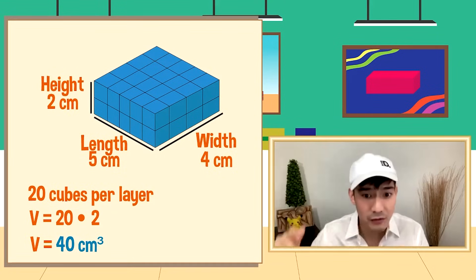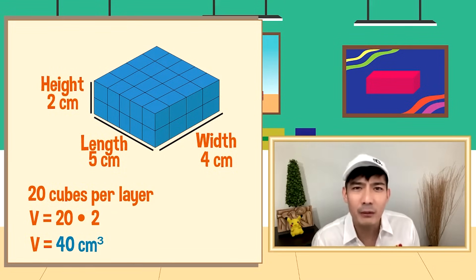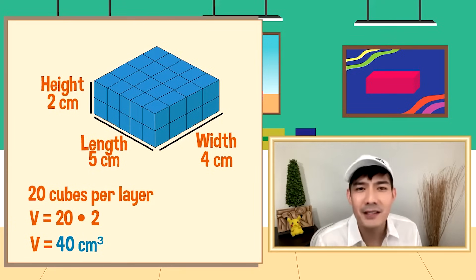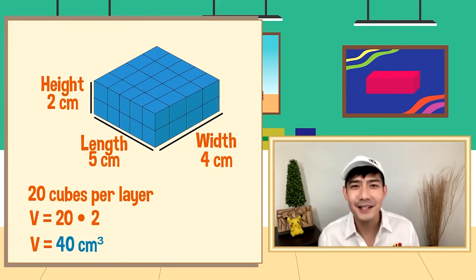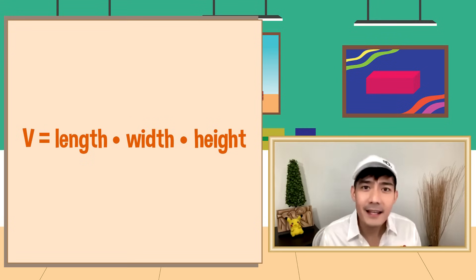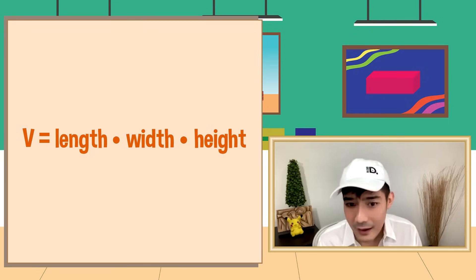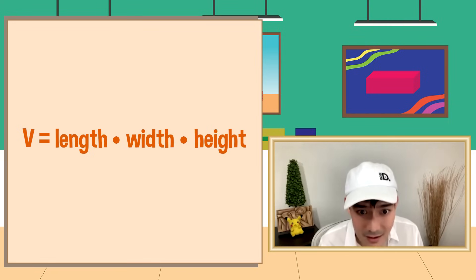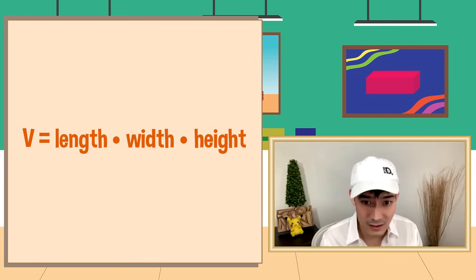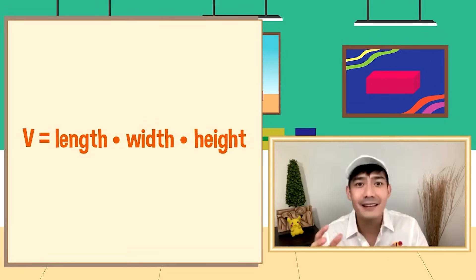Try naman natin using the formula when solving for the volume of a rectangular prism. Rectangular prism ito. Ang formula ay V is equal to L times W times H — Length times Width times Height. Ang hinahanap natin ay ang volume — yung laman ng isang 3D figure.